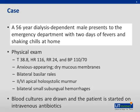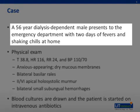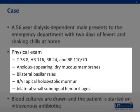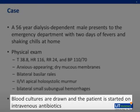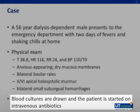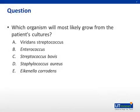A case. A 56-year-old male with end-stage renal disease on hemodialysis presents to the emergency department with two days of fevers and shaking chills at home. Vital signs are temperature 38.8, heart rate 116, respiratory rate 24, and blood pressure 110 over 70. Physical exam reveals an anxious-appearing male with dry mucous membranes, a 2 out of 6 holosystolic murmur at the apex, rales, and small subungual hemorrhages. Blood cultures are drawn, and the patient is started on IV antibiotics. Which organism will most likely grow from the patient's cultures?